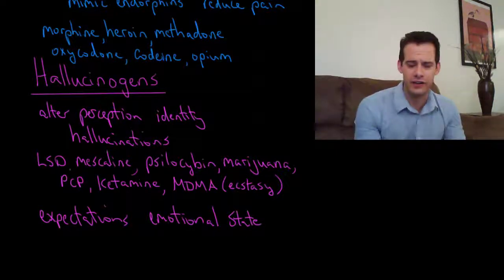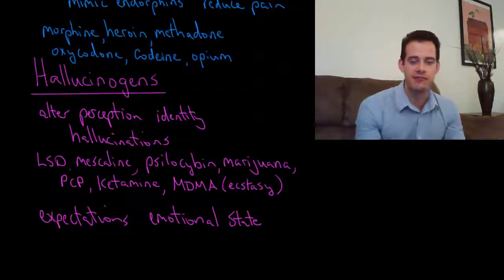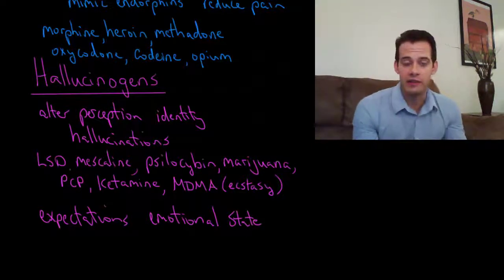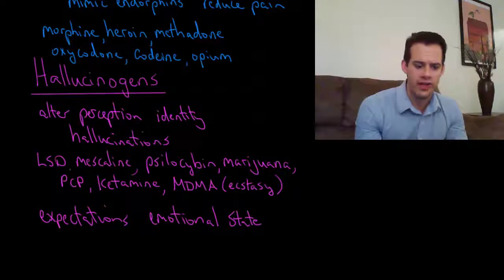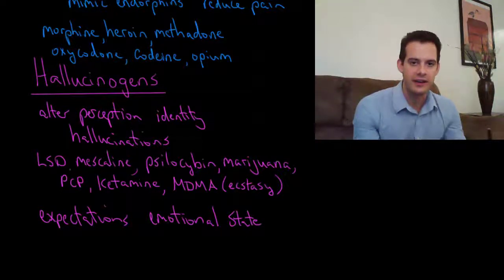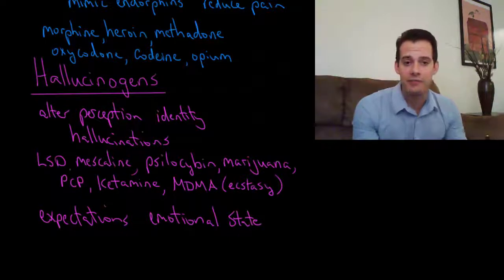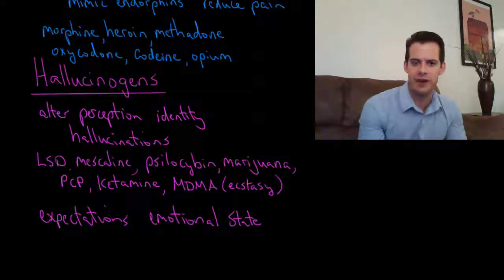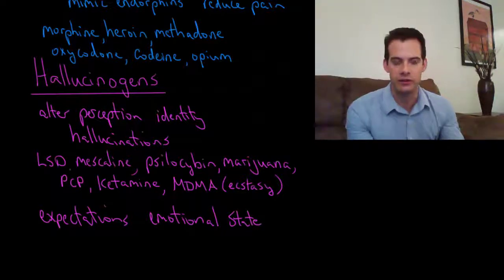Another interesting effect of hallucinogens is that they can have what's called reverse tolerance, and this is because they remain in the body longer. For instance, the byproducts of THC and marijuana can linger in the body for up to a month after use. This reverse tolerance refers to the idea that sometimes people can experience a greater high from the drug in subsequent uses with a smaller amount. Normally we have tolerance and people need to increase the amount of drug that they use over time.